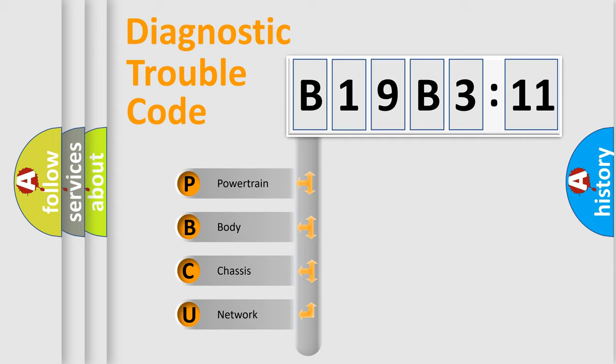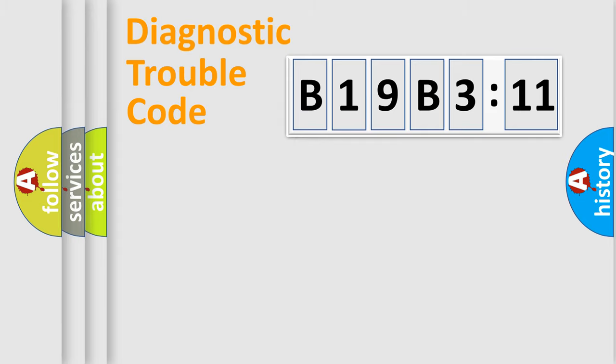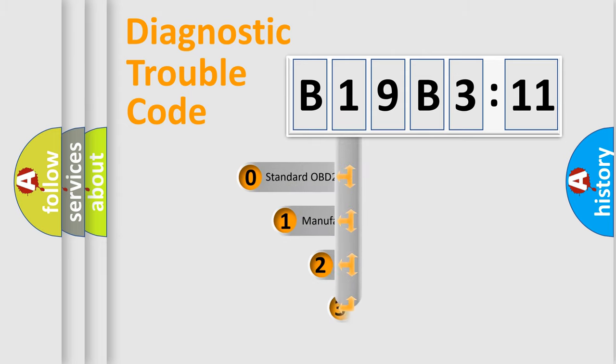We divide the electric system of automobiles into four basic units: Powertrain, Body, Chassis, and Network. This distribution is defined in the first character code.